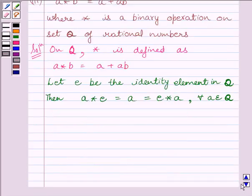Now, let us find out A star E. We know A star E equals A plus AE, which must equal A.